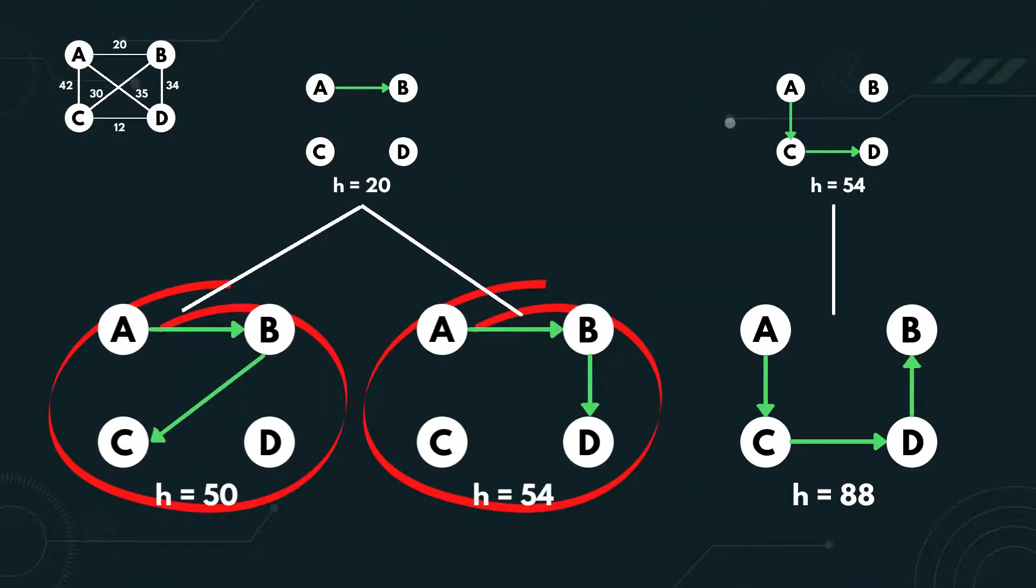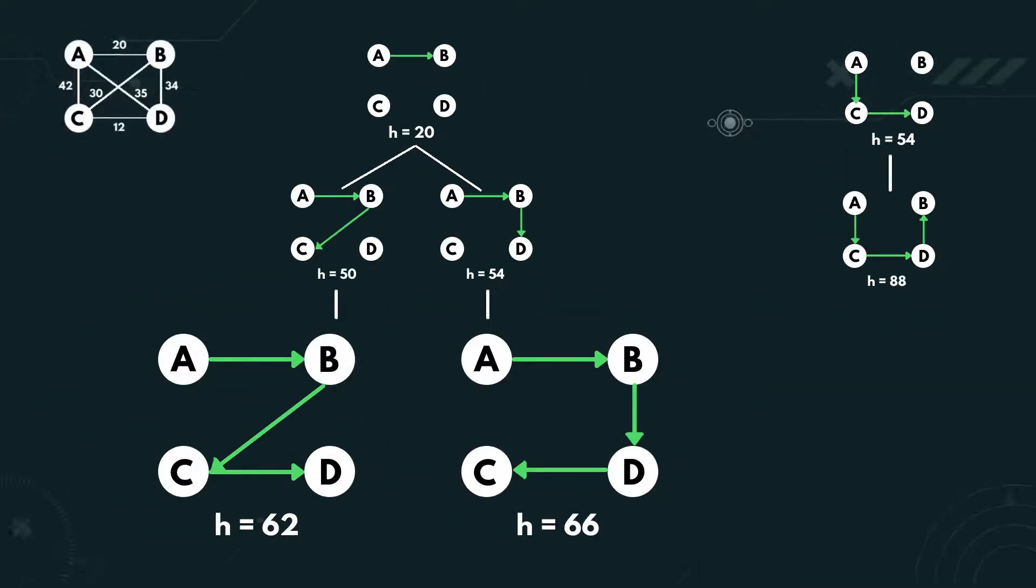Since we haven't reached the goal, select the best two successors to be expanded. For both states, we can only expand one successor each. A, B, C, D has a heuristic value of 62, while A, B, D, C has a heuristic value of 66.